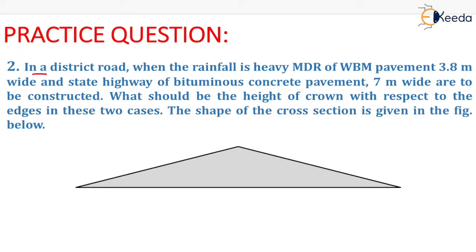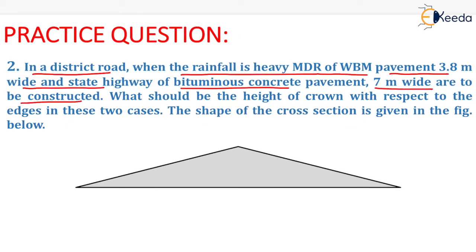The question is given as: in a district road when the rainfall is heavy, a major district road of water-bound macadam pavement 3.8 meter wide and a state highway of bituminous concrete pavement 7 meter wide are to be constructed. What should be the height of crown with respect to the edges in these two cases — that is, for a heavy rainfall area for major district road of water-bound macadam, and for state highway of bituminous concrete pavement in heavy rainfall area? We have to determine the height of the crown with respect to the edges in these two cases.